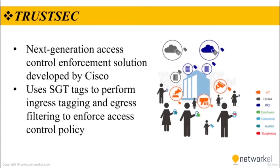SGT tags represent the context of the user, device, use case, or function. This means SGT tags are often named after particular roles or business use cases. For example, a corporate user with a Mac that successfully authenticates via 802.1x using EAP chaining could be assigned an SGT by ISE named 'MAC-corporate'. If the Mac is not compliant with posture requirements because it is not owned by the corporation, it can be assigned an SGT named 'MAC-guest'.